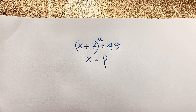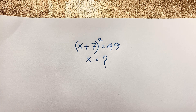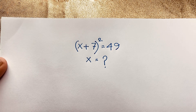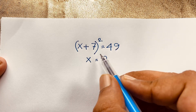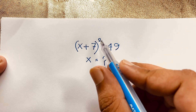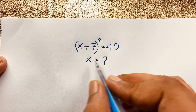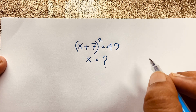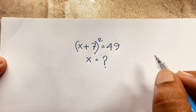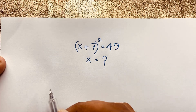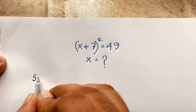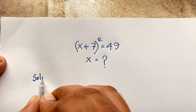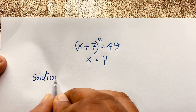Hello everyone, welcome to Rastus Classroom. Today we are solving an easy math problem which is (x + 7) whole to the power 2 is equal to 49. x is equal to what? How to solve this interesting math problem?